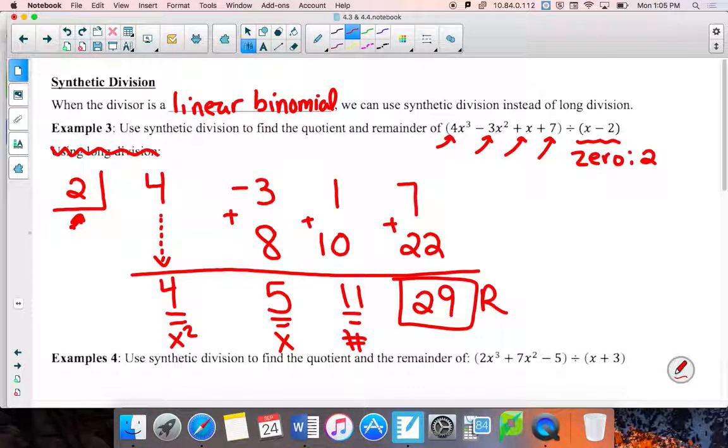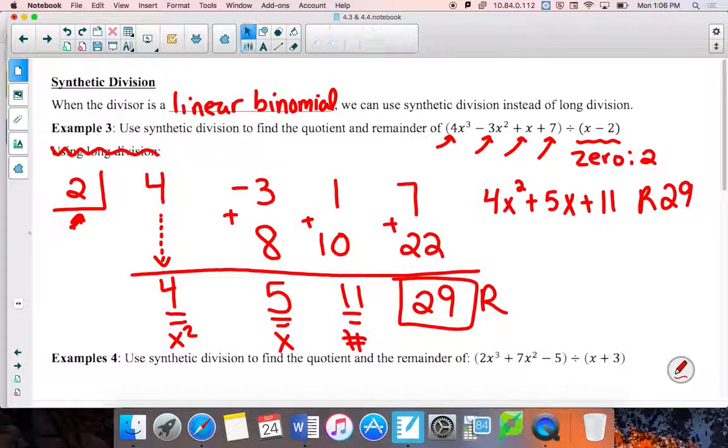When you're done, this number is always your remainder. This one is just the number, the constant. This is your x. This is your x squared. If we had more numbers, we'd be going x cubed, x to the 4th, etc., etc., until we're done. So I know this answer is going to look like a 4x squared plus 5x plus 11 with a remainder of 29. And if you flip over to the front of your sheet, you'll see we got the exact same answer. Synthetic, long division, just two different animals. All right, let's try another one.